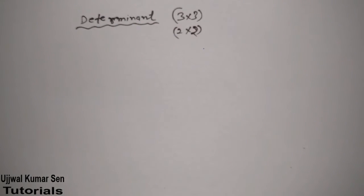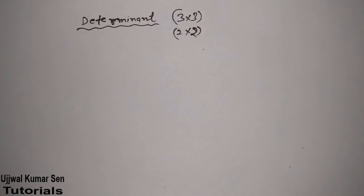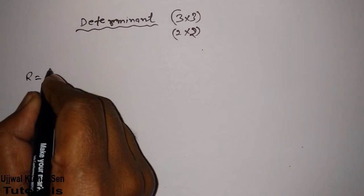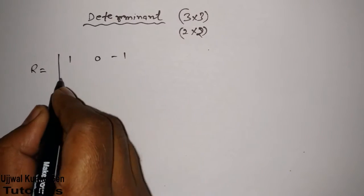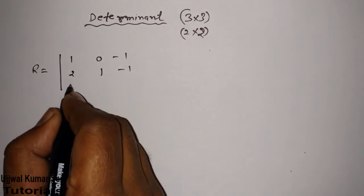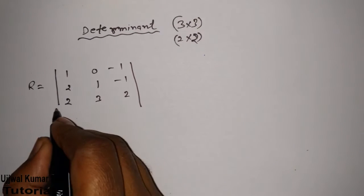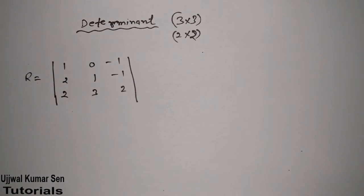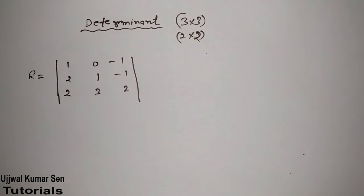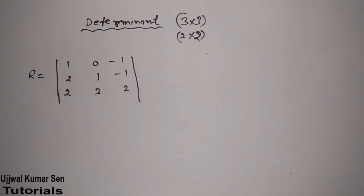Hello, this is Jalkamarsin and in this tutorial I am going to share with you how to find out the determinant of a 3x3 and 2x2 given matrix. Suppose that we have matrix R equal to [1, 0, -1 / 2, 1, -1 / 2, 3, 2, 1]. This question was already asked in GATE, but they asked to find out the inverse of the matrix. Here I am going to share with you how to find out the determinant of this matrix.